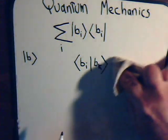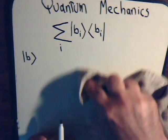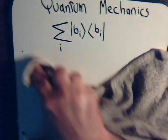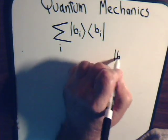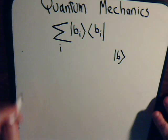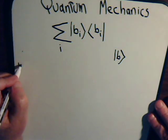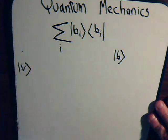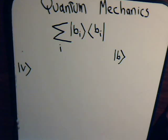So let's just take a general ket vector, take a general ket vector v, and we can expand it out now in terms of these basis vectors.